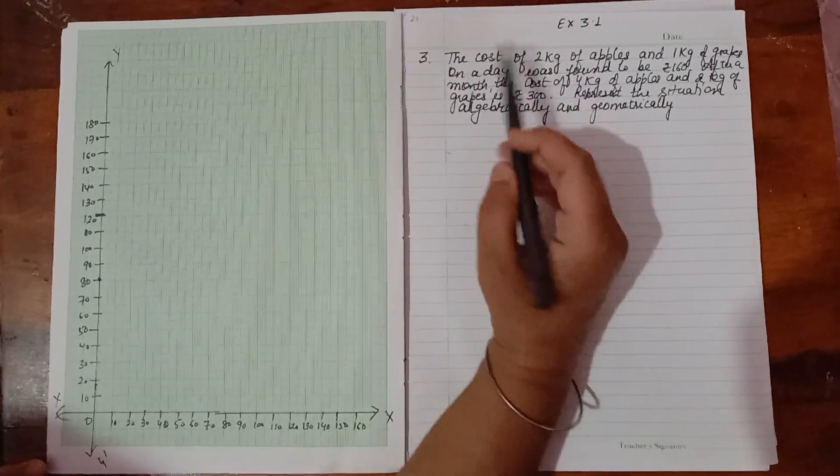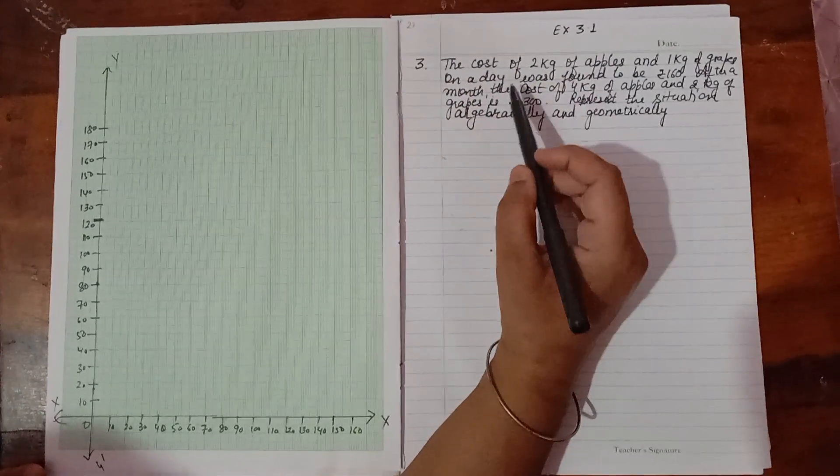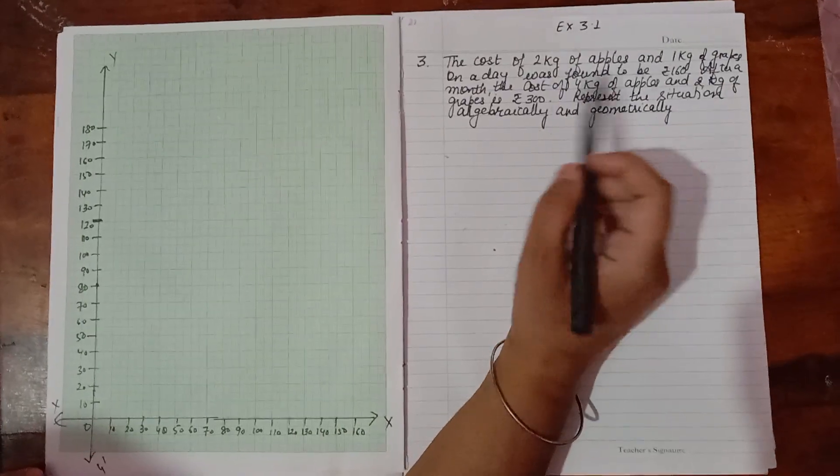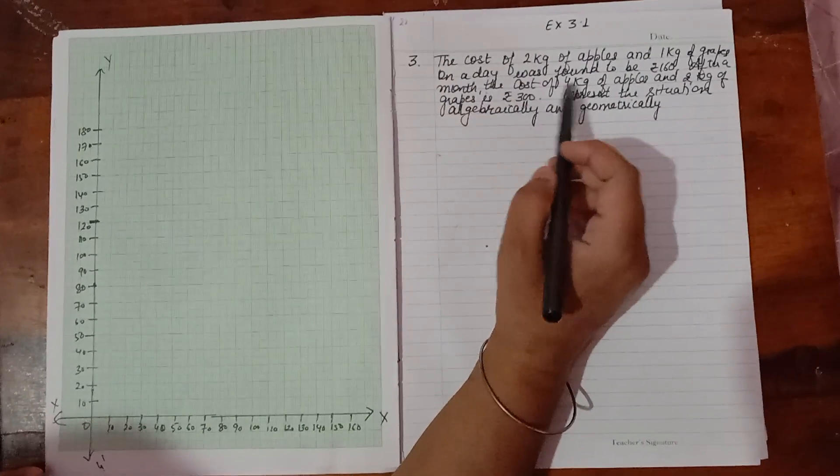Back to your favorite channel Math Helper. CXS 3.1, question number 3. The cost of 2 kg of apples and 1 kg of grapes on a day was found to be Rs. 160.